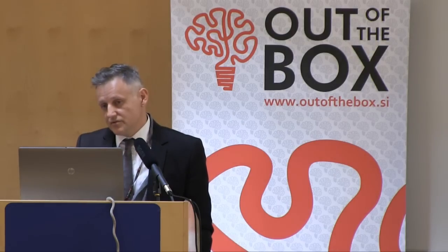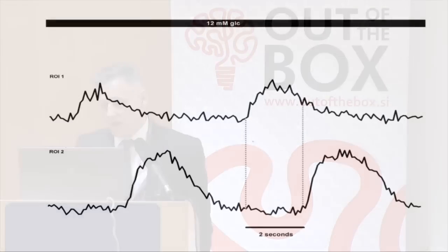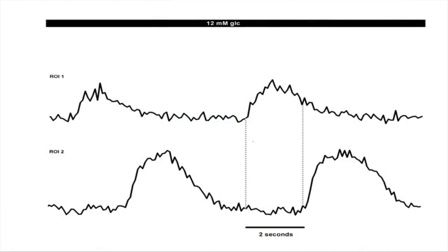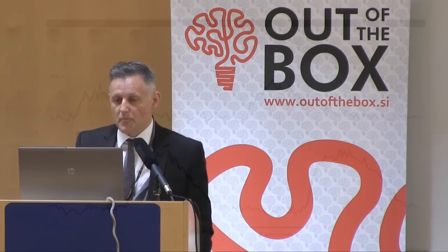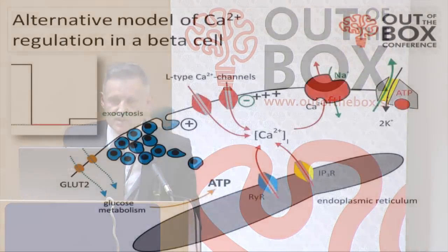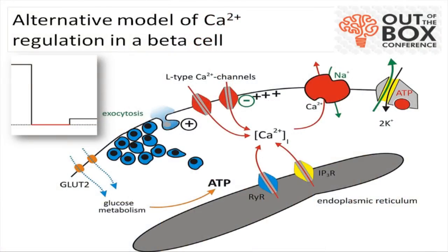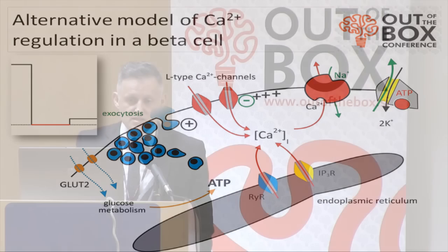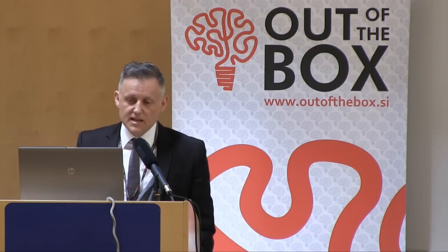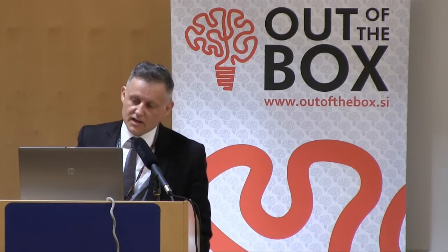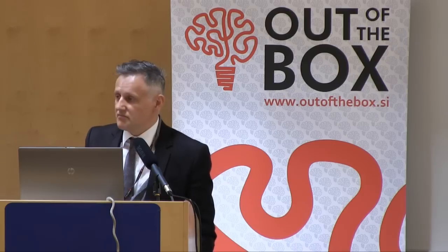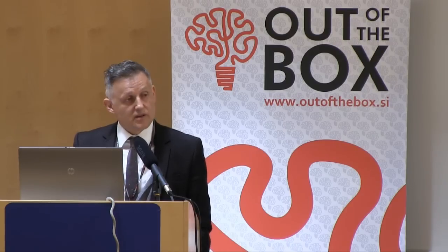An alternative model of calcium regulation in beta cells would not involve only glucose closing potassium channels and opening calcium channels from the outside. We can also have another intracellular storage of calcium — as has been described in many other systems, particularly heart muscle and skeletal muscle — which is another source of calcium to control what is going on in our cytosol.